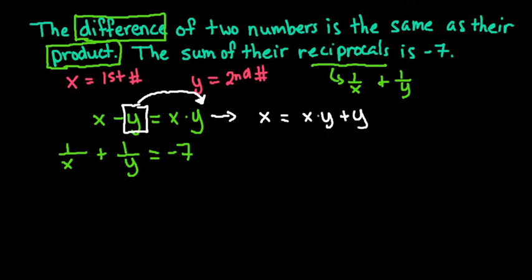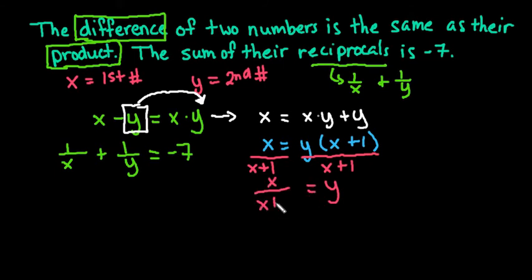I still don't have y by itself, so I want to undistribute a y from both terms - I'm factoring since both terms have a y in it. I'd be left with y times x plus 1. My last step to get y by itself is to divide both sides by x plus 1, so I end up with y equals x over x plus 1.